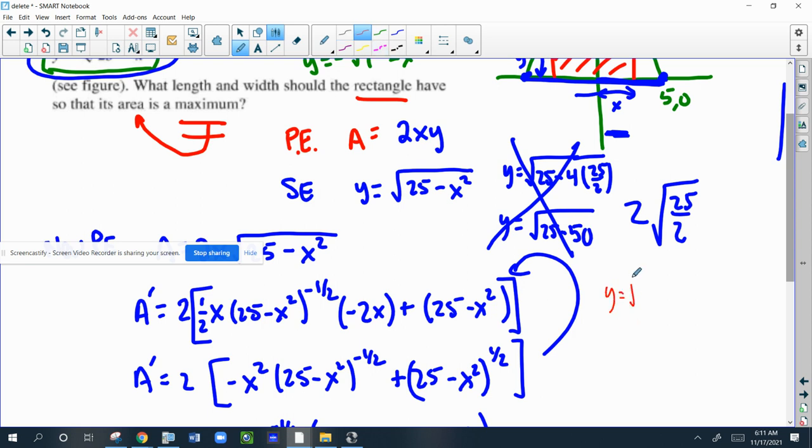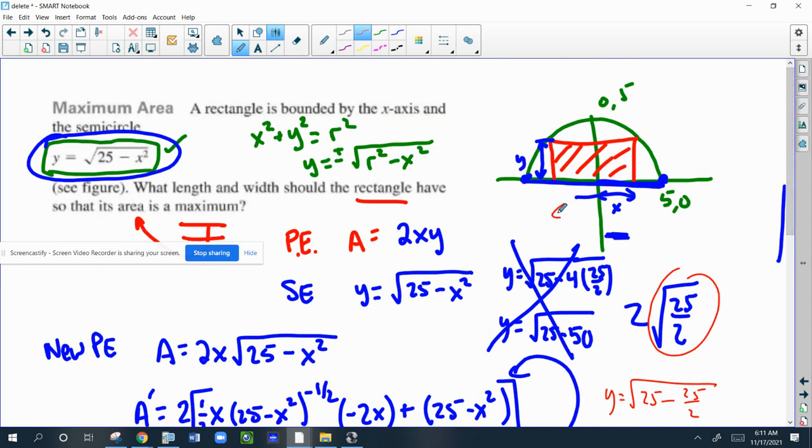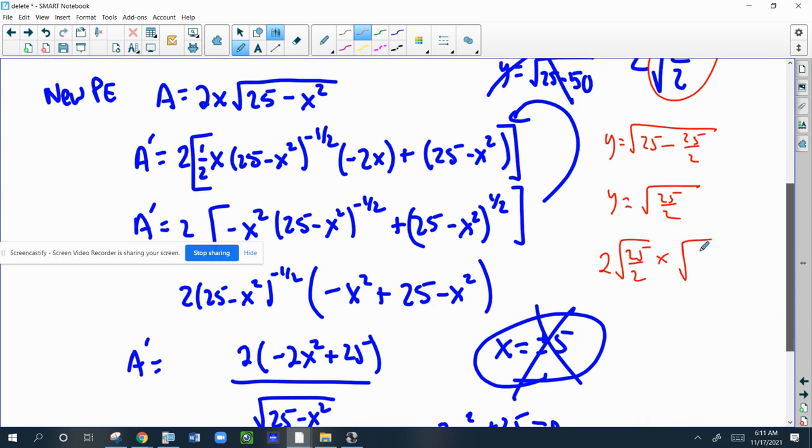So I'm going to redo it right here. So y equals the root 25. And this is actually going to be a little bit easier. Minus x is this. So root 25 over 2 squared, which is just 25 over 2. So this would be y equals the square root of, that's going to be 50 over 2 minus 25 over 2. So that's y. So my dimensions would be 2 root 25 over 2. Again, it's 2 because I need the entire length of the base times the height, which is root 25 over 2. And that would be it.